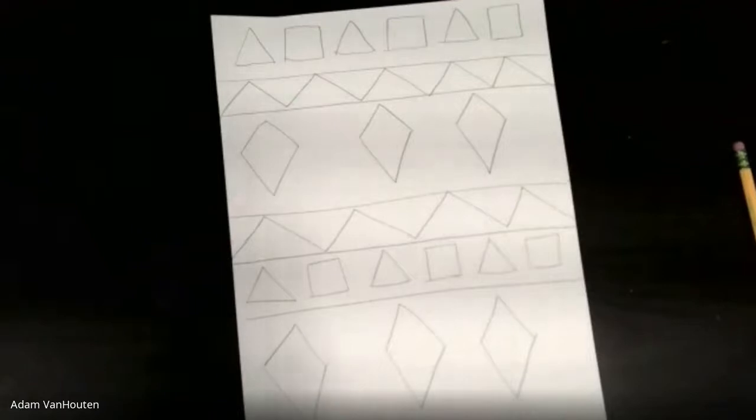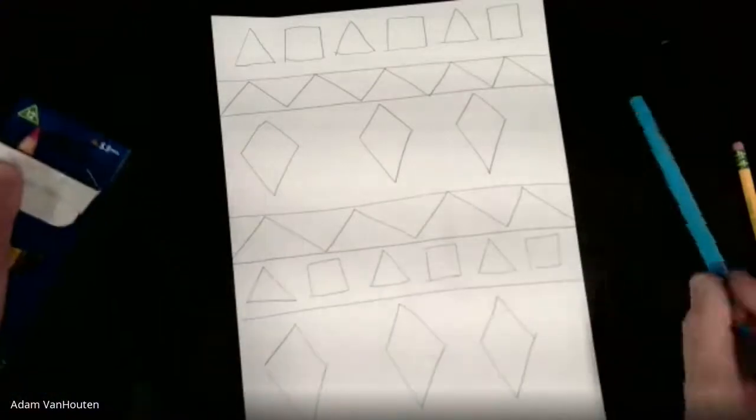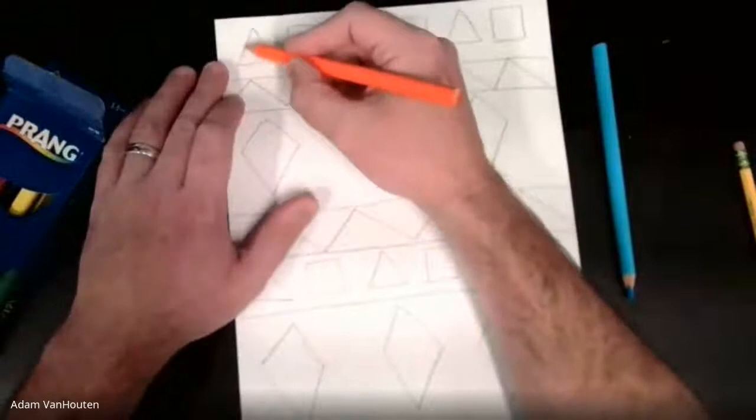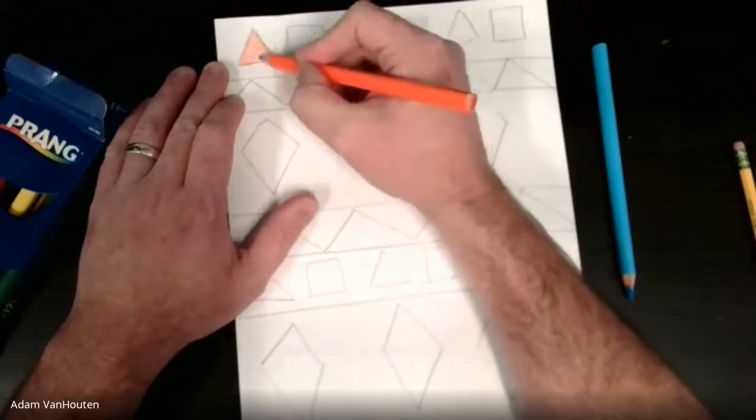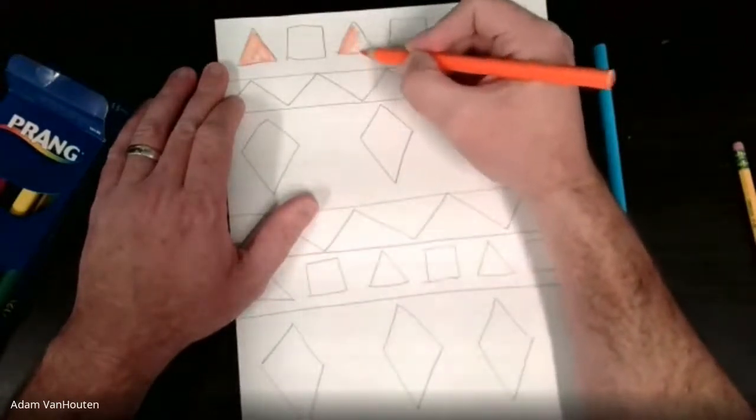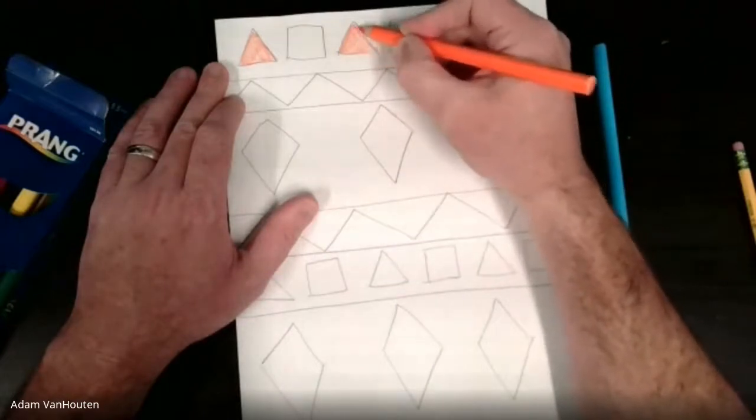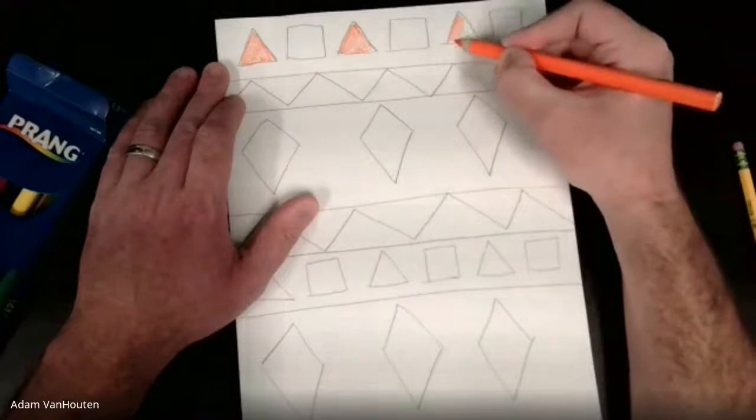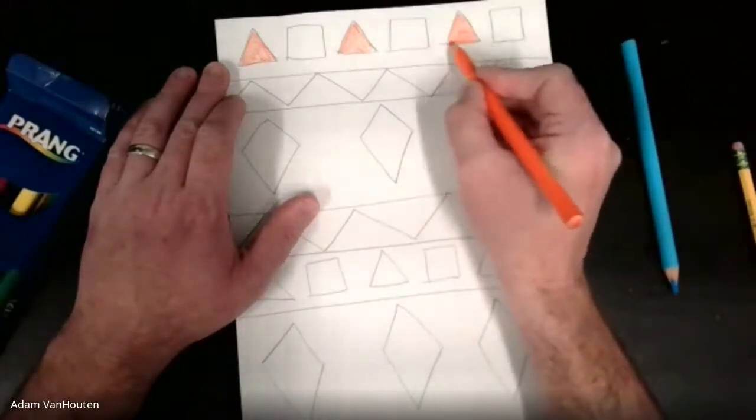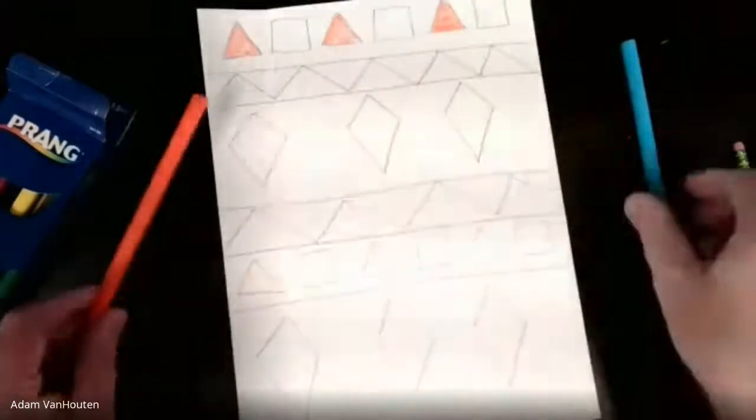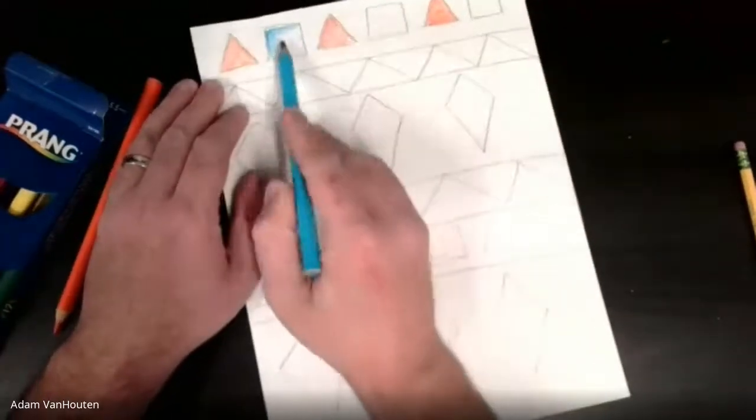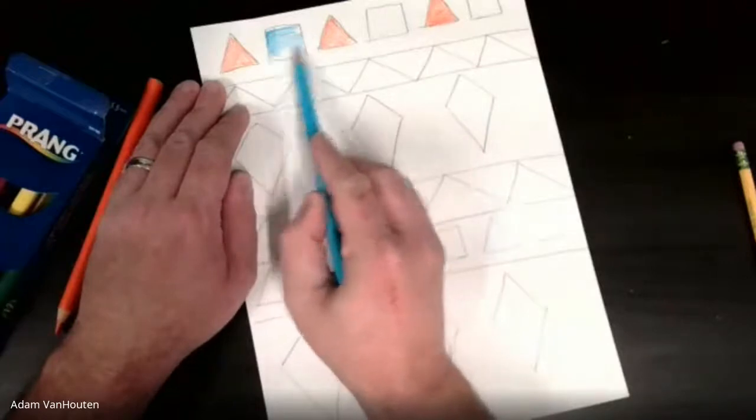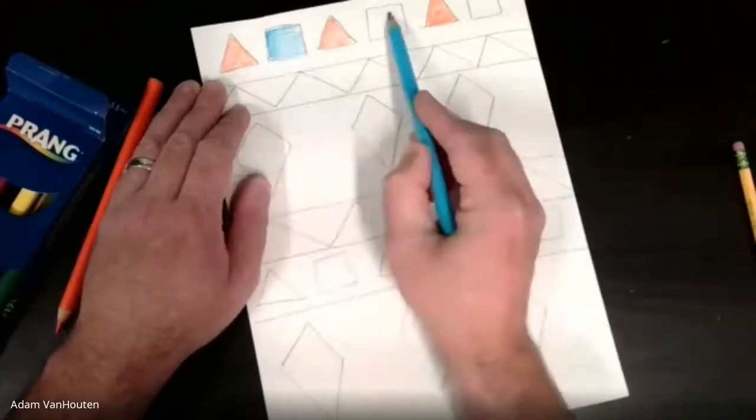And then if you have markers, crayons, colored pencils, something like that, think of a couple colors that you'd like to make yours. So let's say I were to do triangle. Or maybe all my triangles here are orange. So orange triangle. And then I'm going to do a blue square. So blue square, orange triangle. There we go.